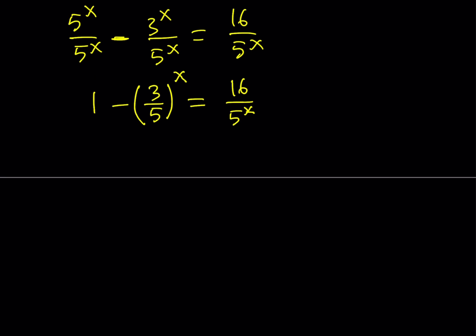Now when you look at this equation carefully, this equation has an interesting property. What is it? It is the fact that 3 over 5 is less than 1. So what about it?